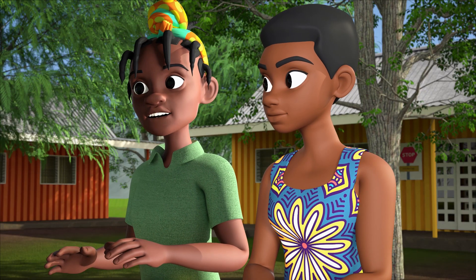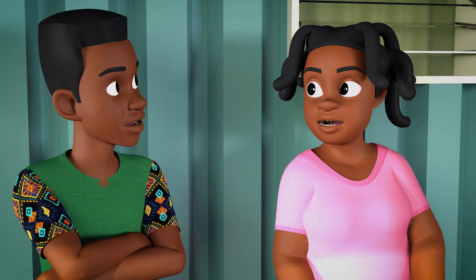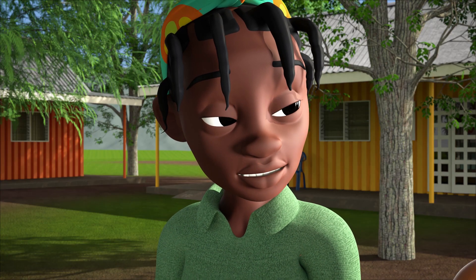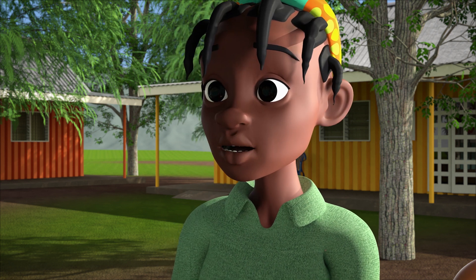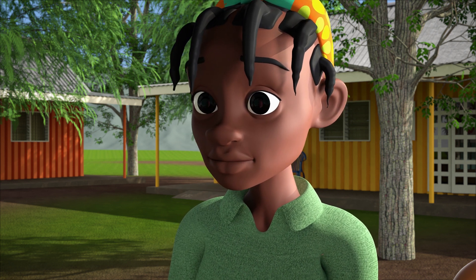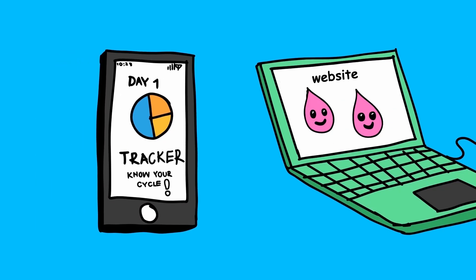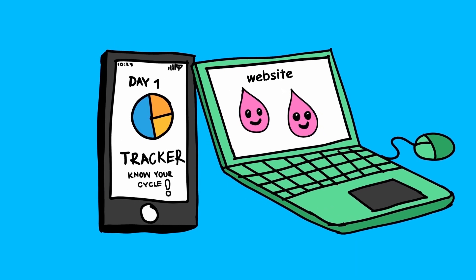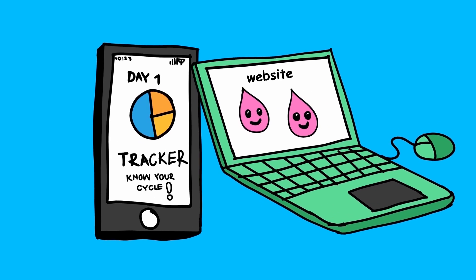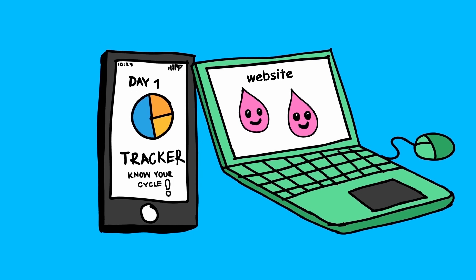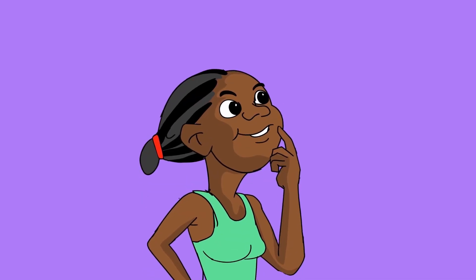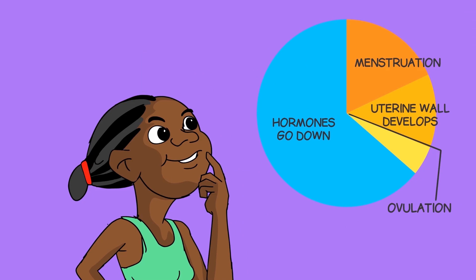Imagine — sperm can live for up to five days after sex. So especially for women with shorter cycles, it is possible to get pregnant during your period. Menstrual tracking apps, websites, and other digital tools have got better at predicting when your period will come, and they also provide information about menstruation and other topics.